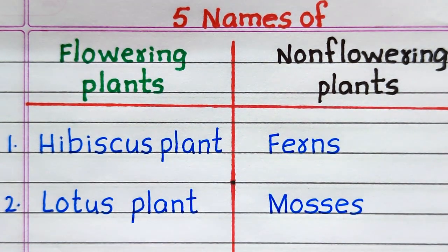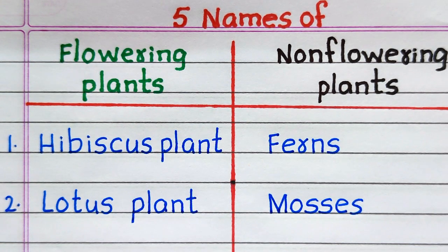Name of the first flowering plant is hibiscus plant. Second, lotus plant.